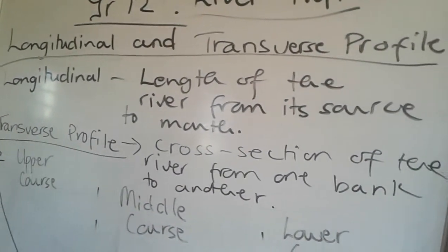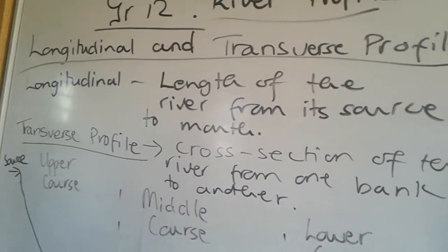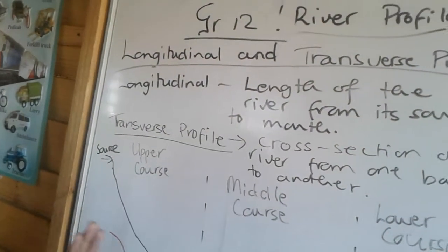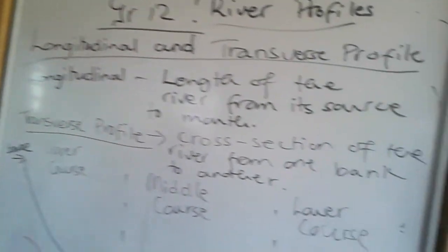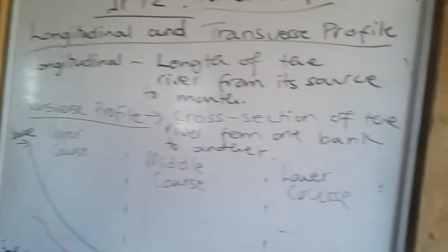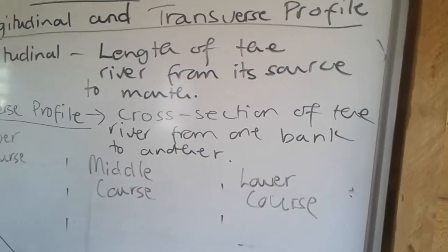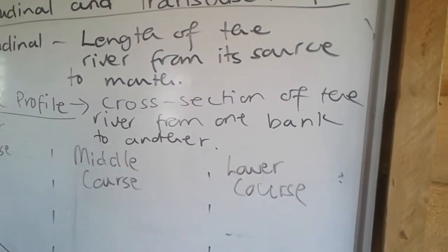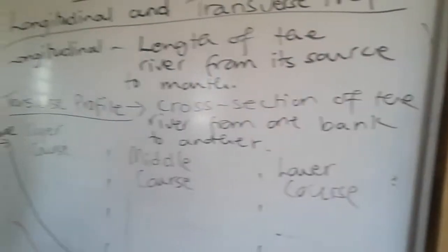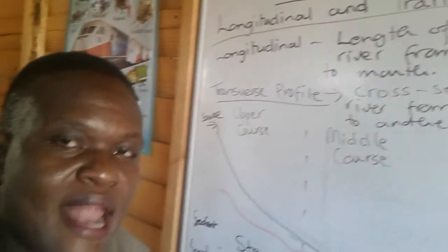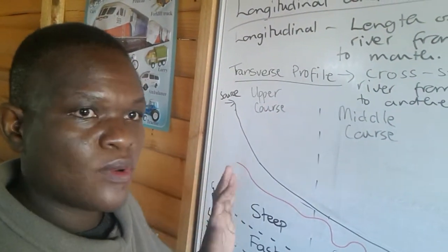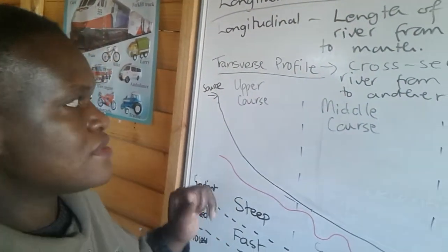A longitudinal profile of a river shows the length of the river from the source to the mouth. A transverse profile shows you a cross-section of the river from one bank to another.